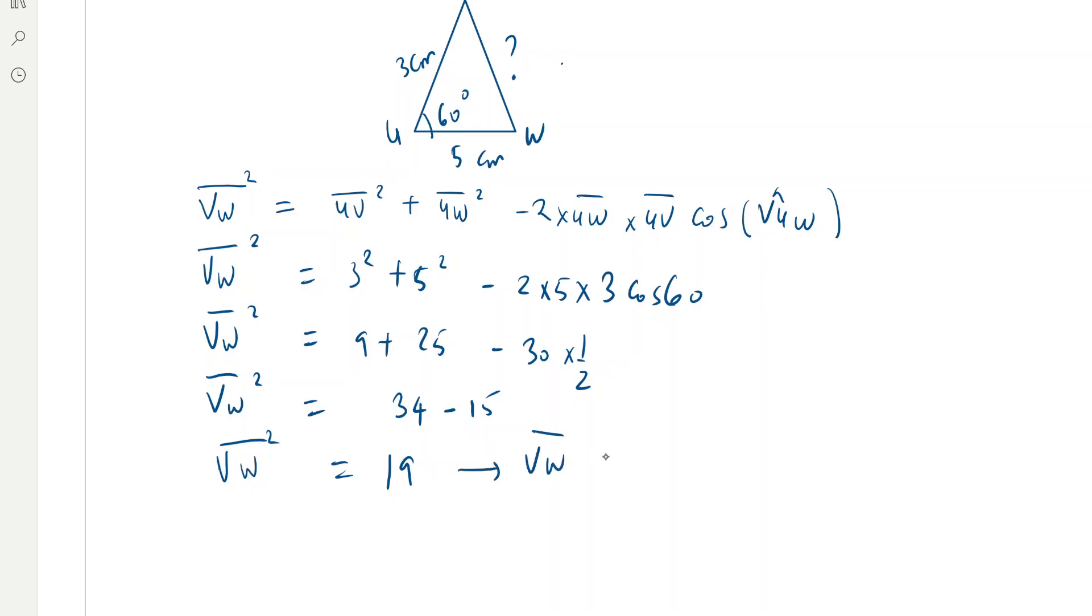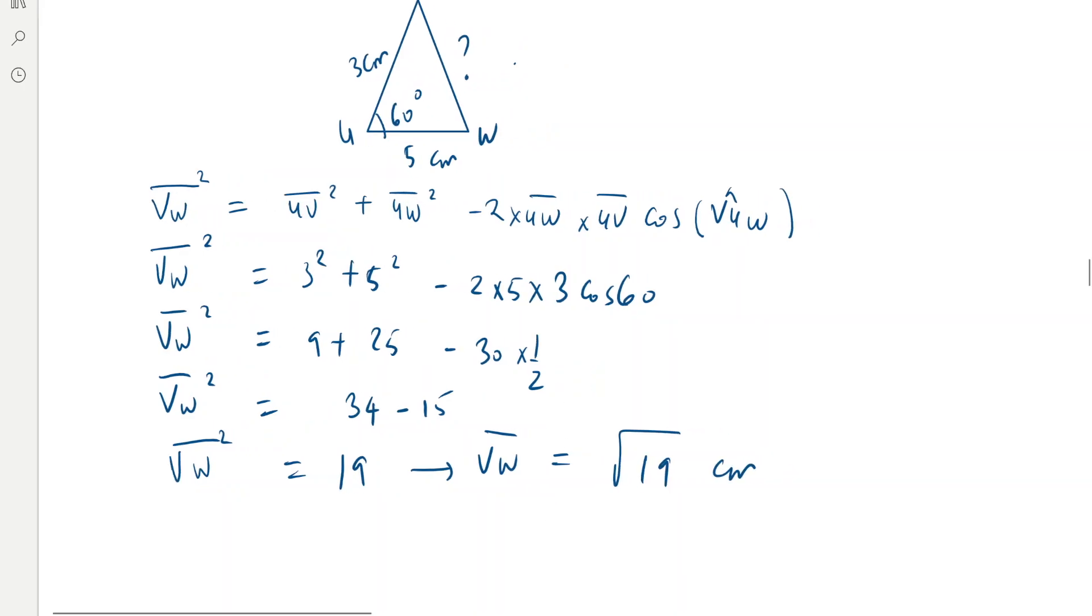So now VW will be square root of 19 in centimeters. We have to find the square root of 19, and because calculator is allowed you can just use calculator to get the value of square root of 19.